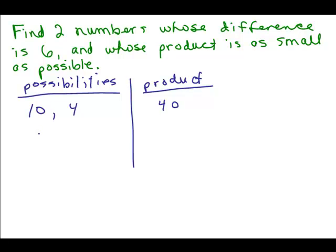How about something else? How about 6 and 0? When you do 6 minus 0 you get 6, so that works. And what's 6 times 0? 0. So this product is smaller than that product. So it's not 10 and 4. That's certainly not the answer. I wonder if this is the smallest you can get.